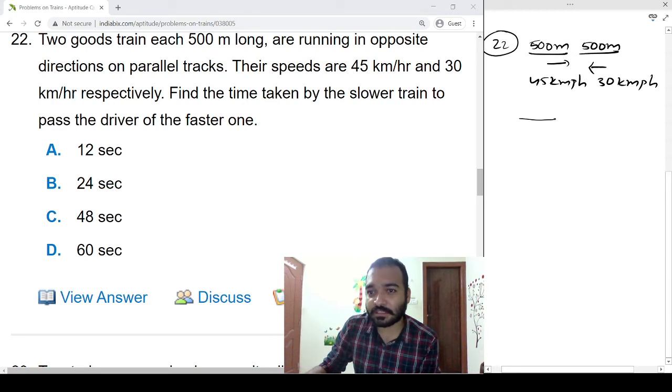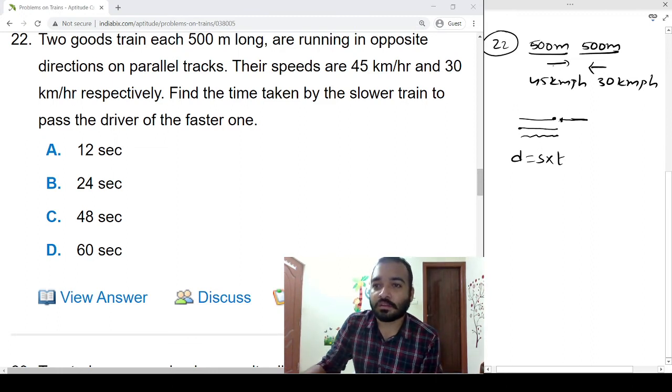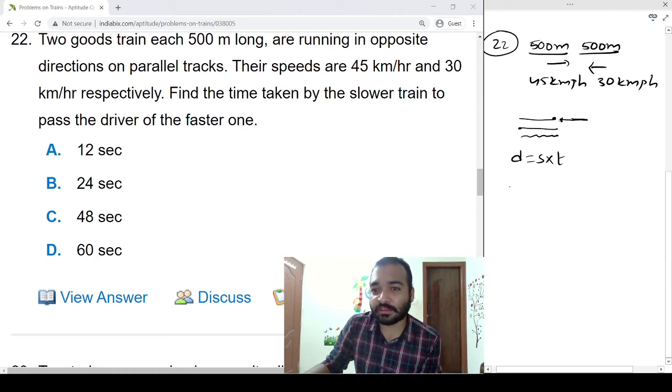Here one person is there. Initially the faster train and slower train is here. So after passing the driver of the faster train, the train will come like this. So the total distance this train travels is only the length of the faster train. Otherwise we can think that it should cross only the person, the driver, so in that case the distance is only one train length.